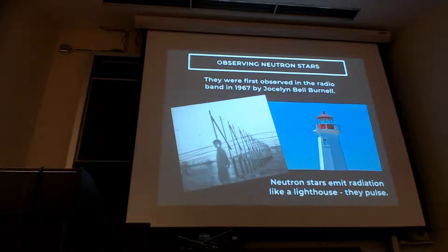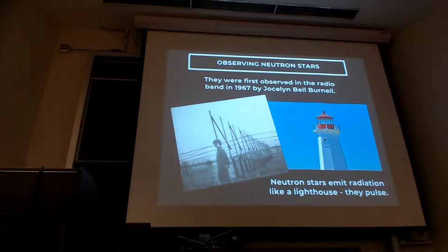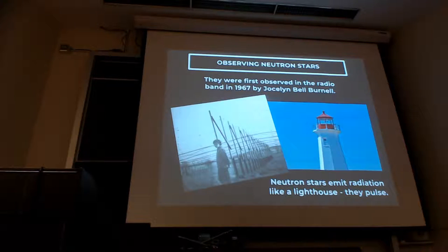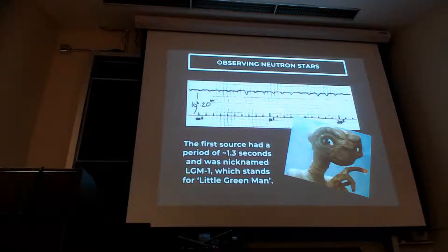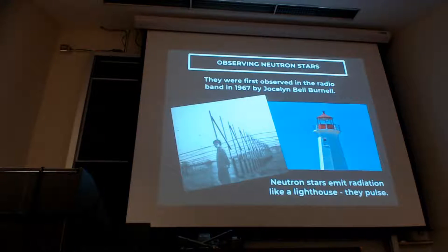That's actually how neutron stars were first observed. In 1967, Jocelyn Bell Burnell was a graduate student in Cambridge in the UK, heavily involved in constructing a radio telescope — which actually looks like washing lines picking up radio signals from space. She looked at recorded chart data and saw that the data had these blips in it, and she realized that was actually the signal from a neutron star.